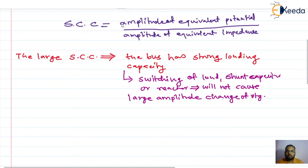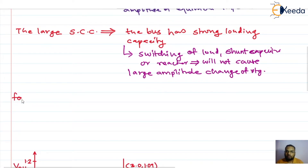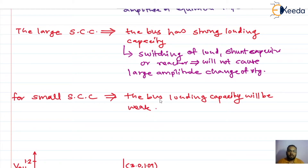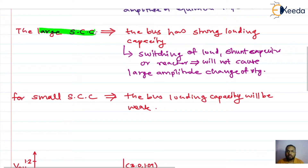On the other hand, for small short circuit capacity we will not have strong loading — the bus loading capacity will be weak. As the loading capacity is weak, switching of load, reactor, or capacitor will cause a large amplitude change in the voltage. So if we want better voltage stability, we go for a large short circuit capacity system, because switching will not cause any large change in the amplitude of the voltage.